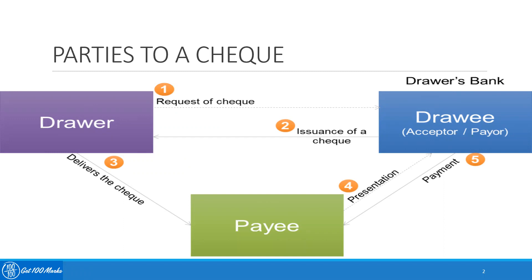A check is a negotiable instrument where you can always see three parties involved in it. The first party is called the Drawer, the second one is called the Drawee, and the third party is called the Payee. The Drawer is the person who gives the order or who writes out the check. The Drawee is the financial institution or typically a bank upon whom the check is drawn, and the Payee is the person or organization who is entitled to receive the payment.